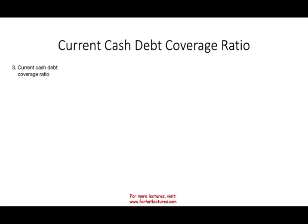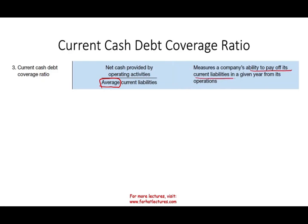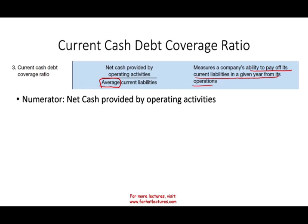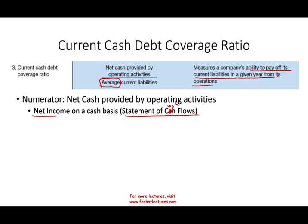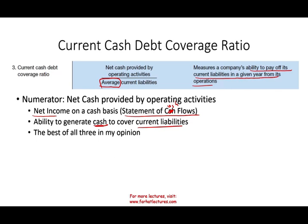The third ratio is the current cash debt coverage ratio, which I believe is the best one. It's computed as net cash provided by operating activities divided by average current liabilities. It measures the company's ability to pay off its current liabilities in a given year from operations. The numerator comes from the statement of cash flows — net income on a cash basis — and it measures our ability to generate cash from operations to cover current liabilities.